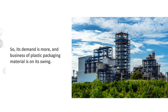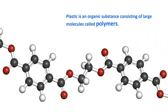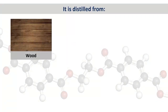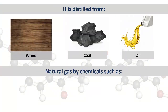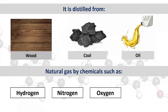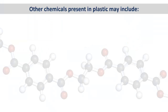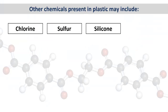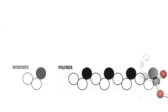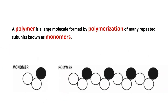Plastic is an organic substance consisting of large molecules called polymers. It is distilled from wood, coal, oil, and even natural gas by chemicals such as hydrogen, nitrogen, oxygen, and carbon. Other chemicals present in plastic may include chlorine, sulfur, silicone, and fluorine. The polymer is a large molecule formed by polymerization of many repeated subunits known as monomers.